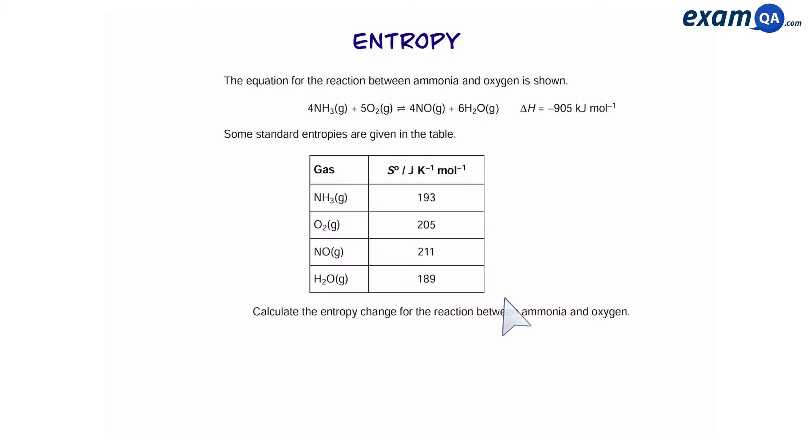Okay, so here's an example. Calculate the entropy change in this reaction. Now notice in this reaction both sides are gases. So let's work out the total entropy change. First of all we're going to work out the reactants. So we have four molecules of ammonia, so that's going to be four times 193. And we also have five molecules of oxygen which is going to be five times 205. In total that gives us 1797.